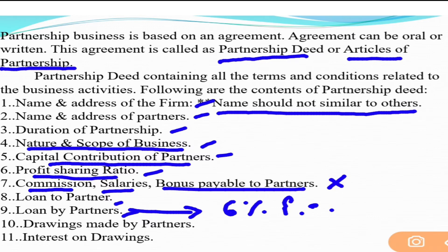Drawings made by the partner — drawings means cash or cash equivalent that a partner withdraws from the firm for personal or family use. Whether a partner can make drawings, and if yes, up to what limit, must be decided in advance. Also, whether the partner will pay interest on those drawings, and at what percentage, must all be decided in advance.